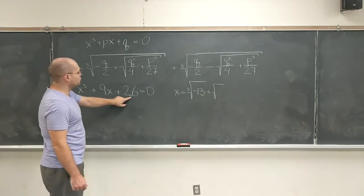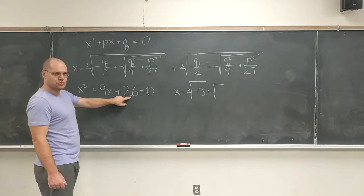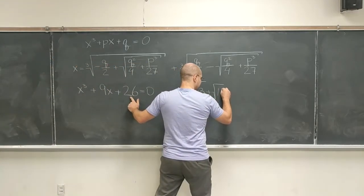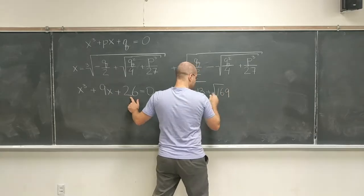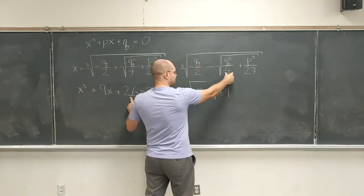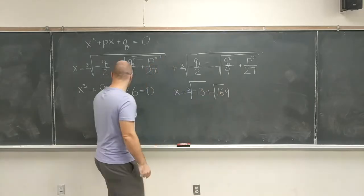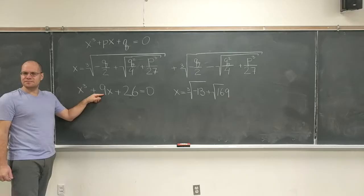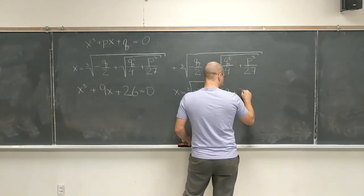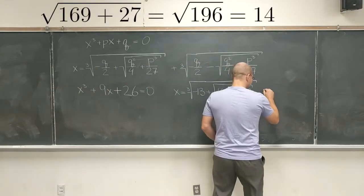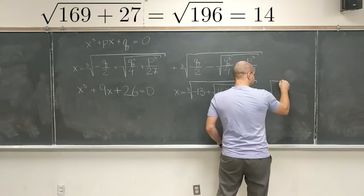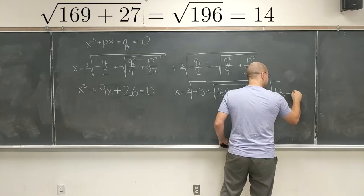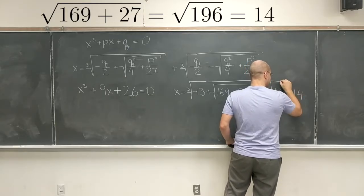So Q. So it's going to be Q over 2, 13 squared. So 169. I guess I shouldn't have hesitated there because this number is always the square of it. So 169 plus 27. Okay. So plus the square root of negative 13 minus 14. There you go.